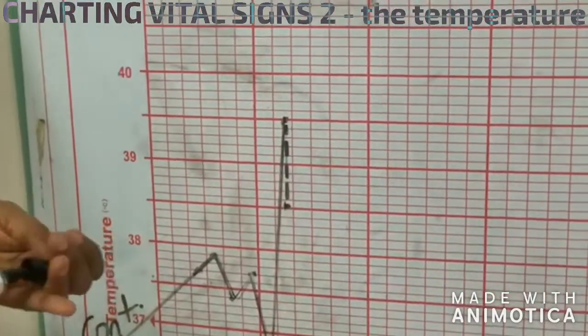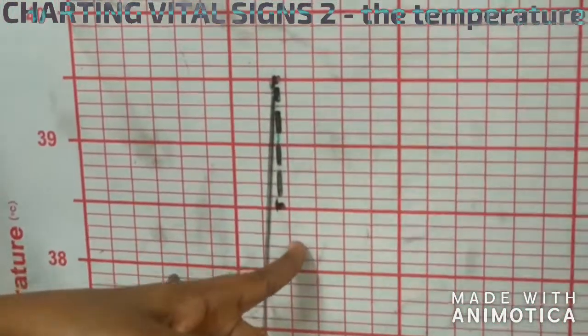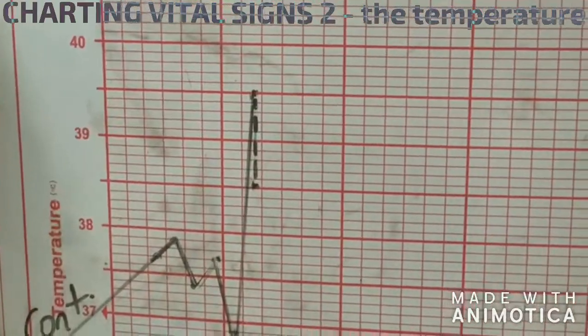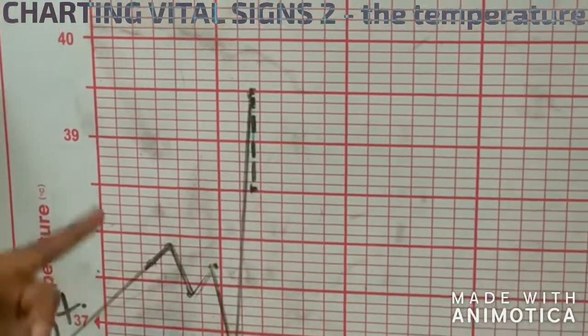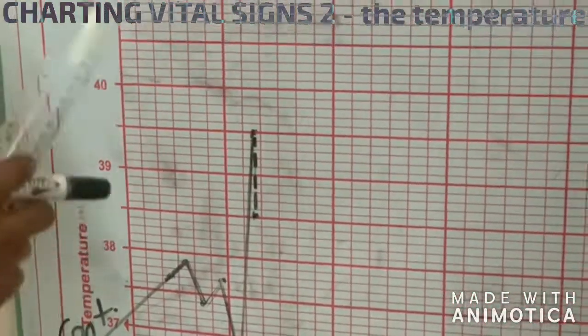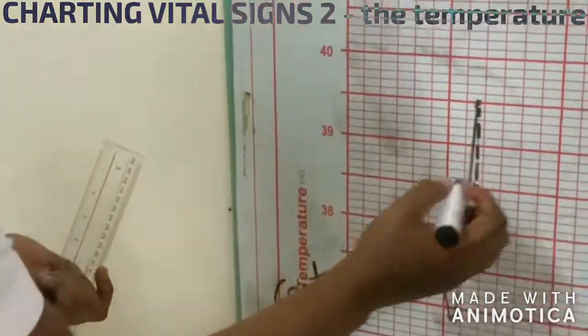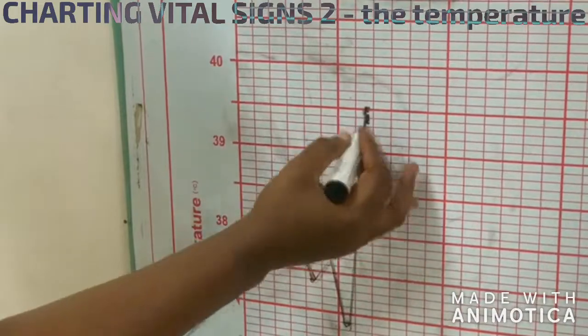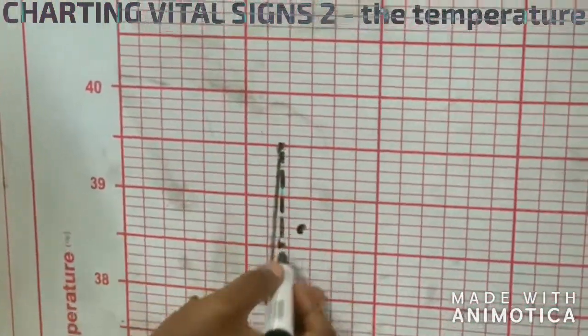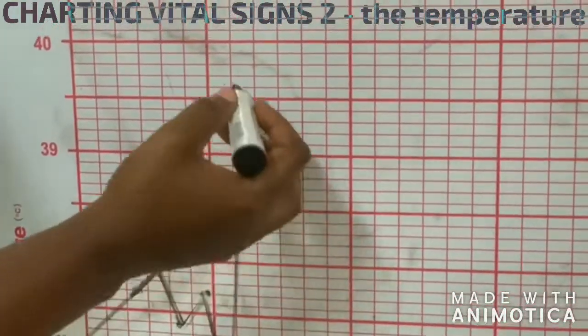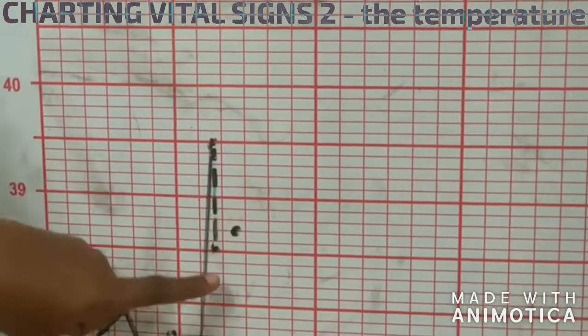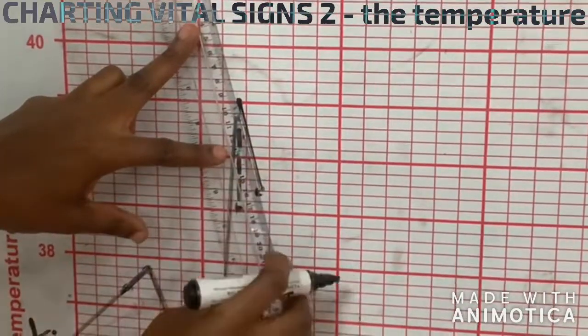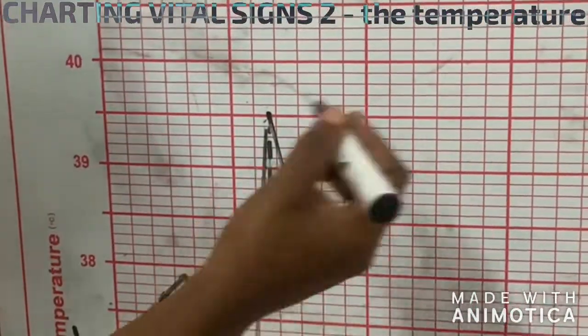So you use a red pen to drop broken lines to where the temperature has dropped. When anybody picks the chart, the person knows that the temperature was 39.5 and the nurse intervened and it dropped to this. When the nurse comes to check temperature at 10 a.m. and now it is, say, 38.7, this person will join it from here, not from here. Don't forget, this is the temperature, but it dropped to this after intervention. But we won't chart from the aftermath of the intervention. We chart from the actual temperature before the intervention.